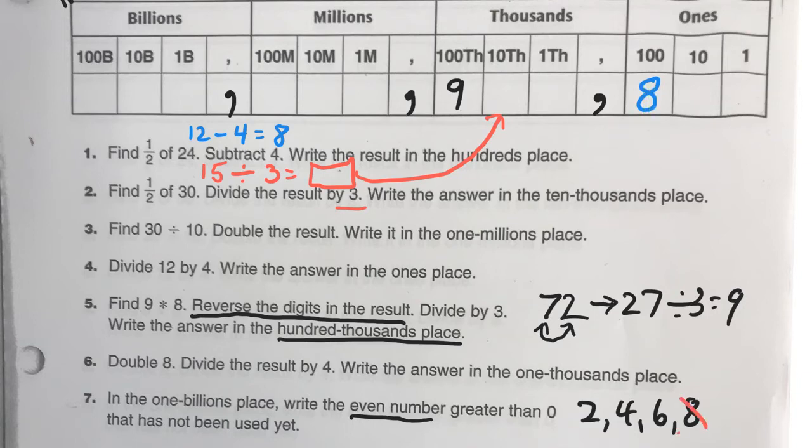And then, you're going to have an even number for 3 and an even number for 4, I believe. So, cross those out. Whatever's left, that goes into the billions place, the 1 billions place there. So, you have to figure out what even number is left.